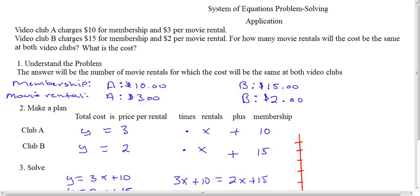Then of course, Club B. We see Club B is charging $2 per rental times, we don't know how many, plus, and then the membership is $15. Again, this is what we know, and we're getting this information directly from what we know.